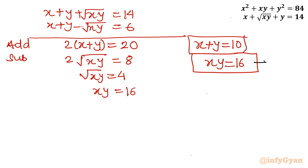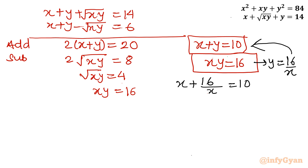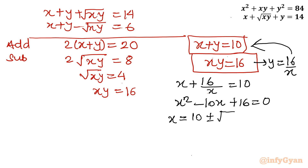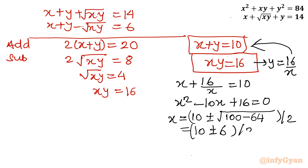With x + y = 10 and xy = 16, I express y = 16/x and substitute: x + 16/x = 10. Multiplying through by x gives x² − 10x + 16 = 0. Applying the quadratic formula: x = (10 ± √(100 − 64)) / 2 = (10 ± √36) / 2 = (10 ± 6) / 2. This gives x = 16/2 = 8 or x = 4/2 = 2.